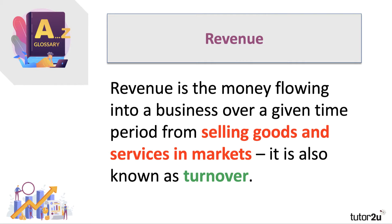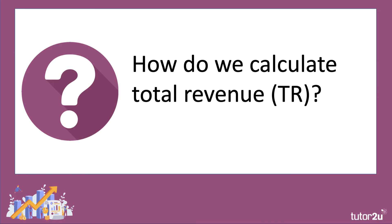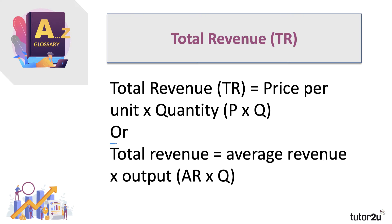Revenue is also known as turnover. First of all, total revenue — how do we calculate it? Total revenue is simply the price per unit multiplied by the quantity. So if we're selling, for example, 200 pizzas per week at five pounds per pizza, that would give us a revenue of one thousand pounds a week: price per unit times quantity.